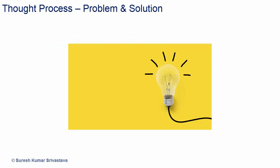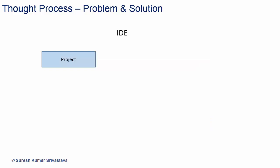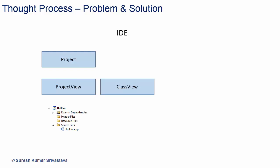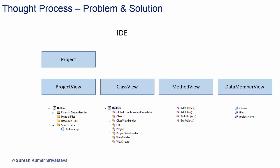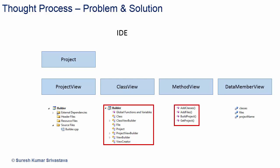Let's have a thought process for a problem and how we will come up with the solution. So we have an IDE and we want to see the project. A project can be seen in project view or class view. Project view will have files to show and class view will have classes to show. There may be more like method view to show methods, data member view to show data members. There can be combinations too, like class view and method view together to show the classes and methods of classes.